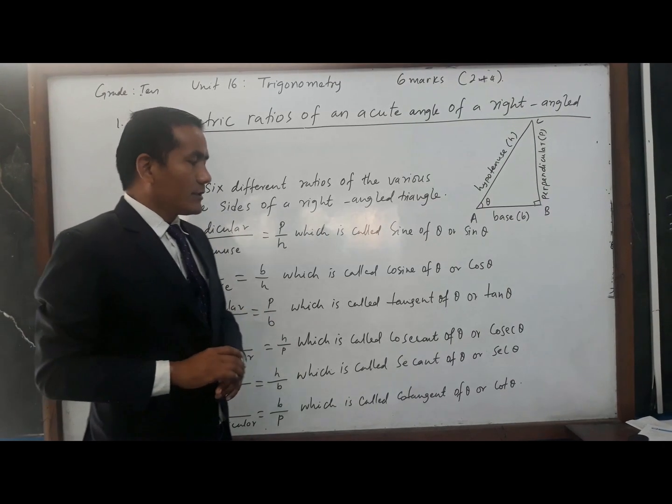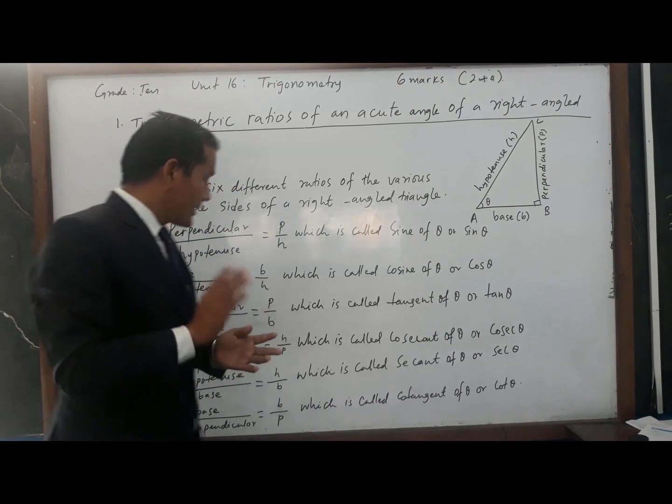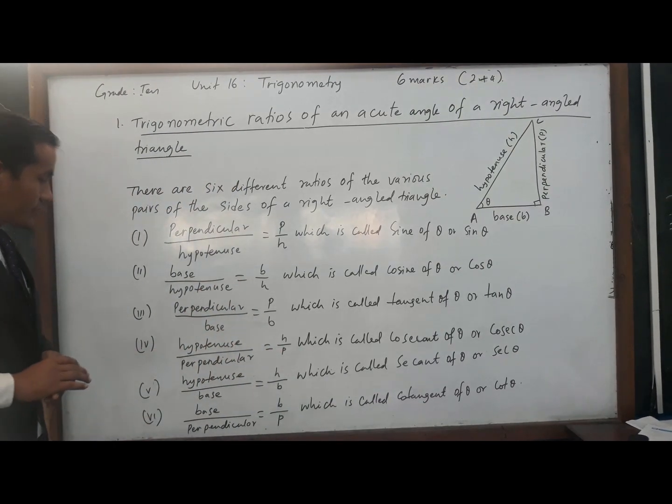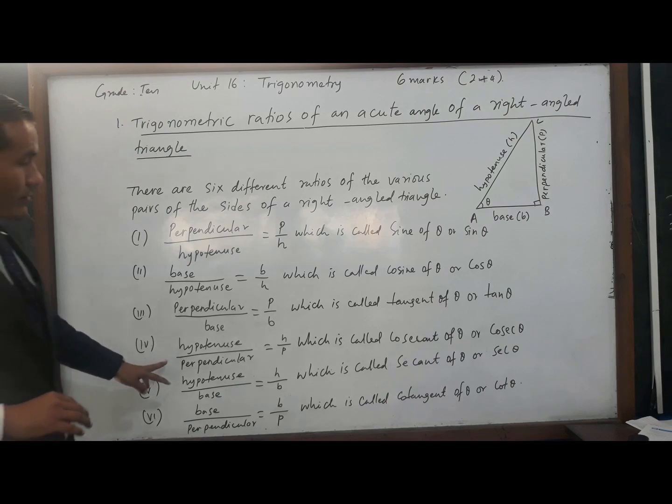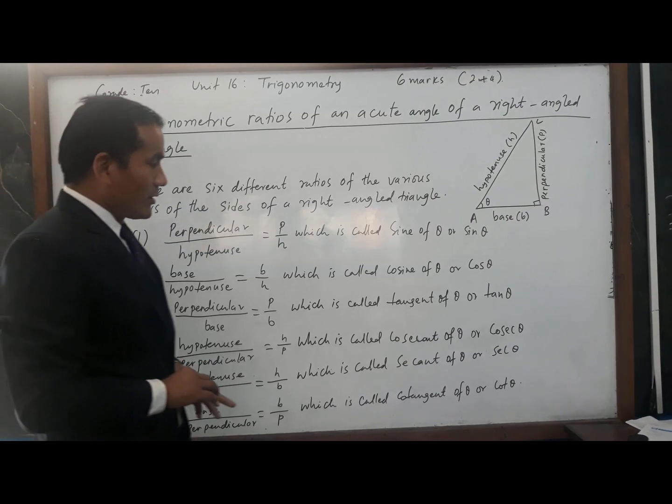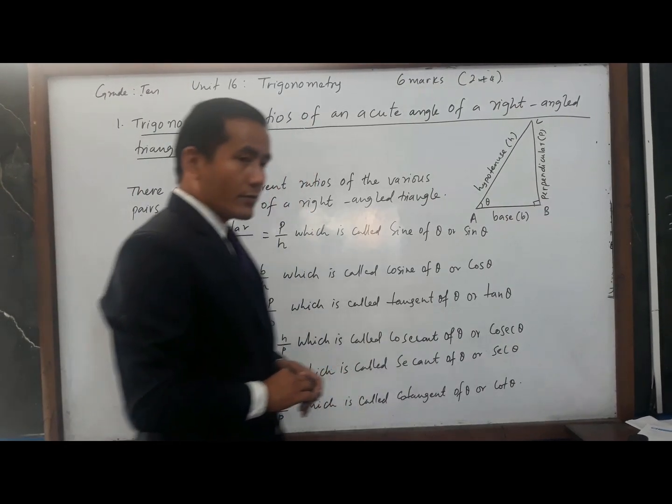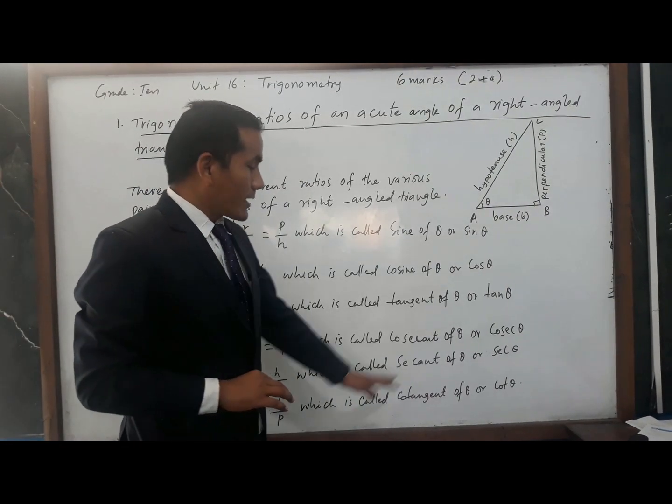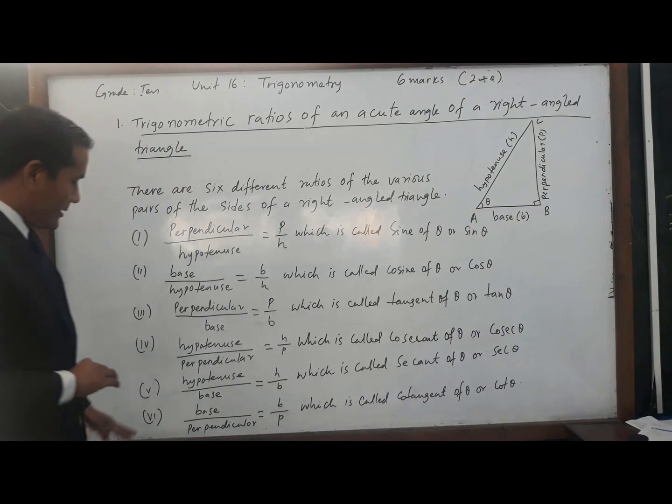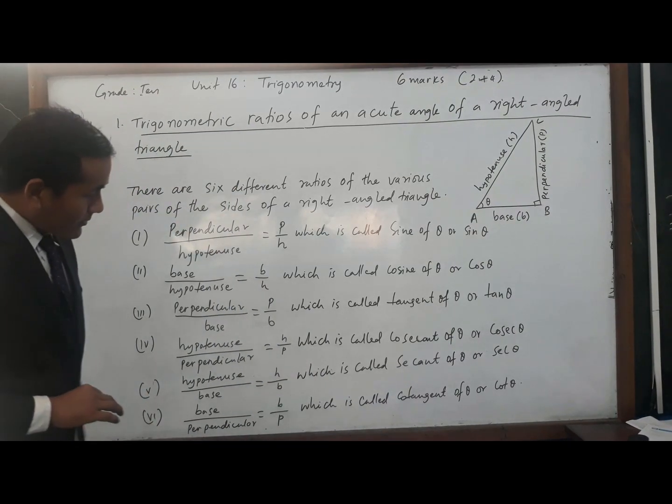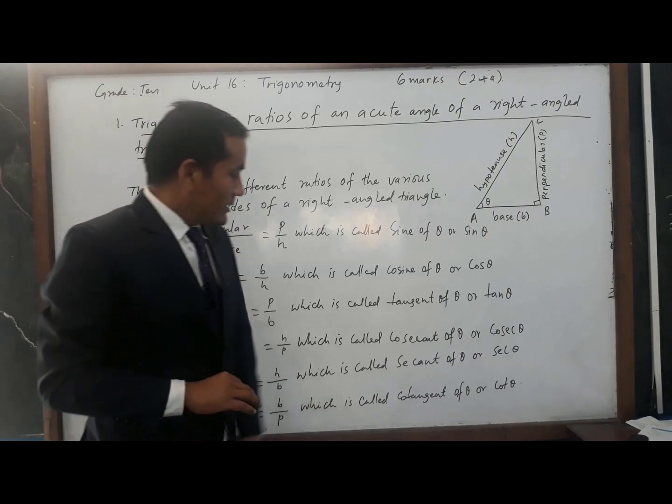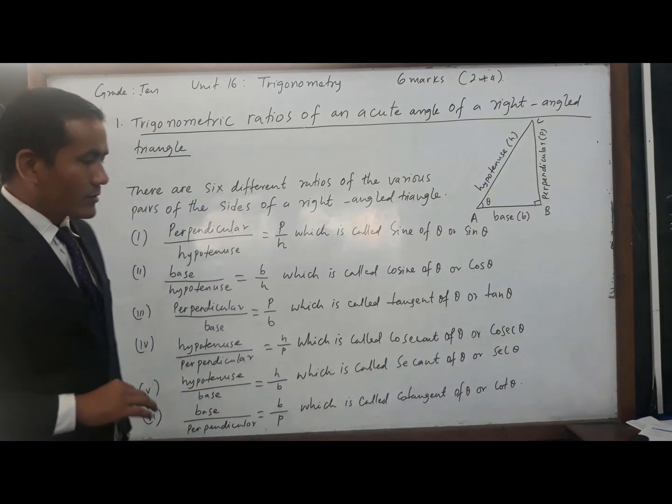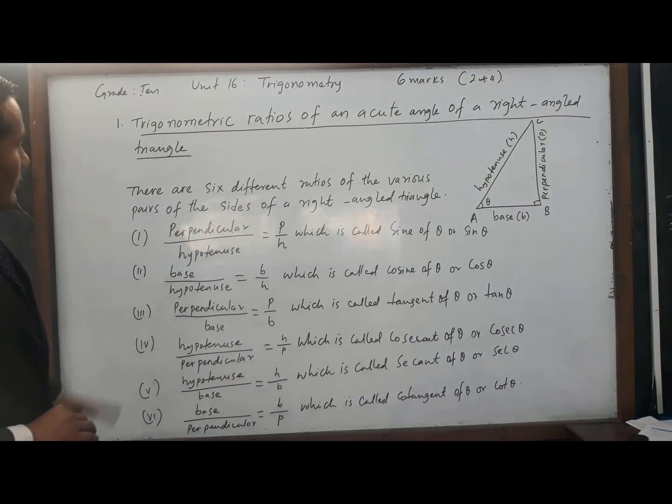Perpendicular by base, which is called tangent of theta, tan theta. Hypotenuse by perpendicular, which is called cosecant of theta, cosec theta. Hypotenuse by base, which is called secant of theta, sec theta. Base by perpendicular, which is called cotangent of theta, cot theta.